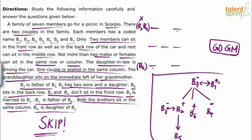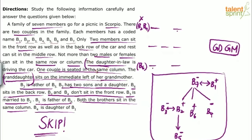The family tree is complete: B7 and B1 are the top generation married couple. The second couple is B3 and B2. The other children of B7 and B1 are B6 and B4. B3 and B2 have child B5. The only gender not yet known is B5, but since there is a granddaughter mentioned and B5 is the only grandchild, B5 must be the granddaughter — female. Now all genders are known.